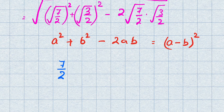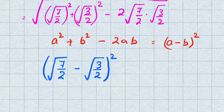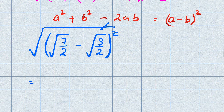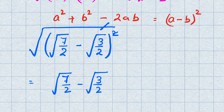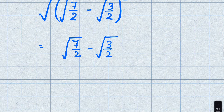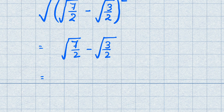So we have √((√(7/2) minus √(3/2))²), all under square root. Removing the square root with the square, we get √(7/2) minus √(3/2). Now we rationalize the denominator, since a radical in the denominator means it is not fully simplified. We write this as √7/√2 minus √3/√2.